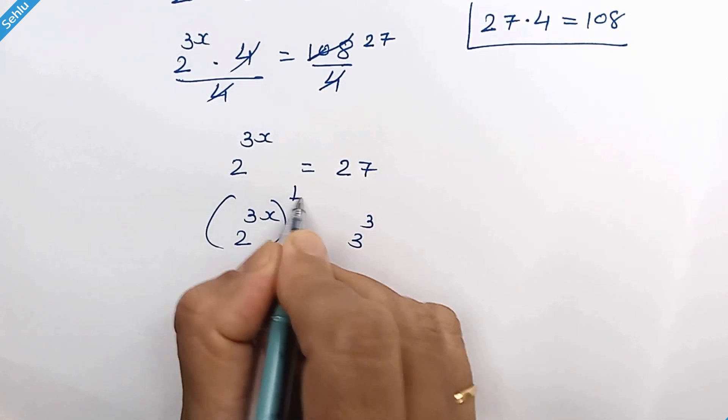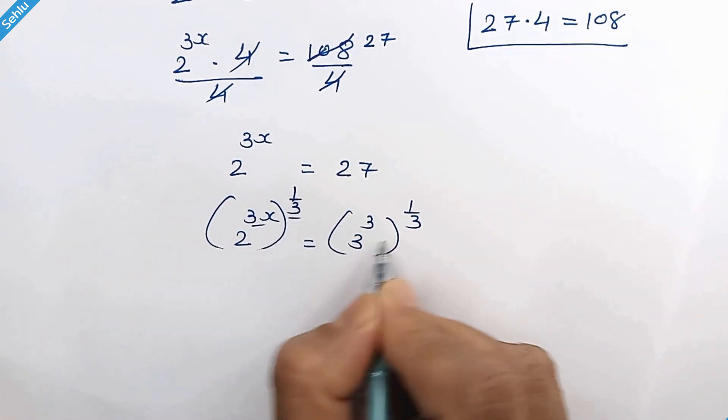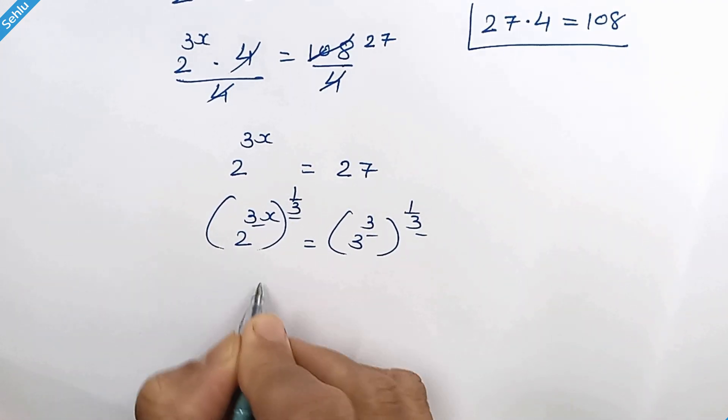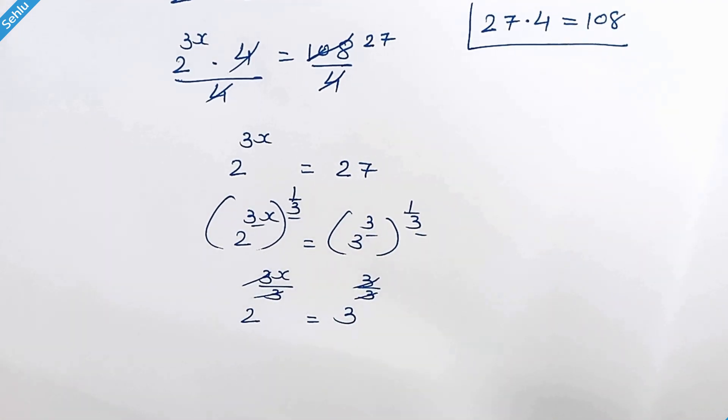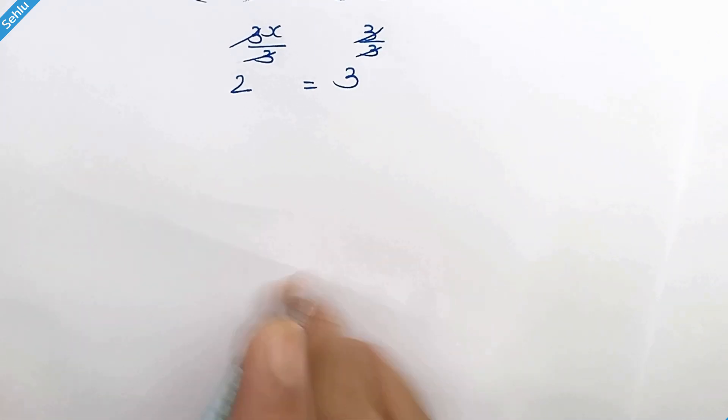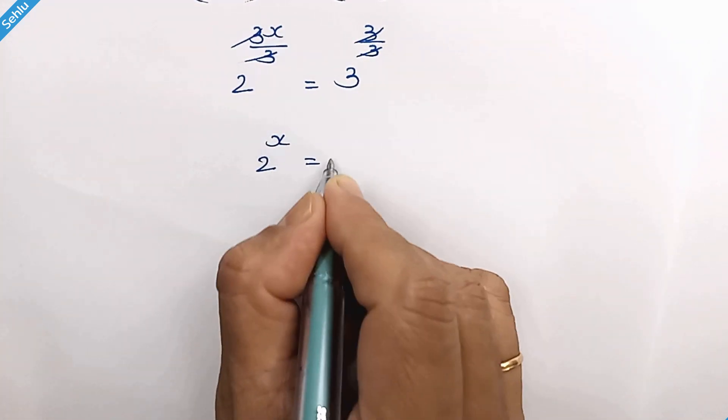If we raise 1 over 3 as an exponent both sides, this 3 and this 3 can multiply. So this 3 gets cancelled out and here this 3 gets cancelled out. So we have 2 to the power x is equal to 3.